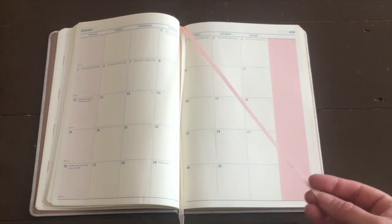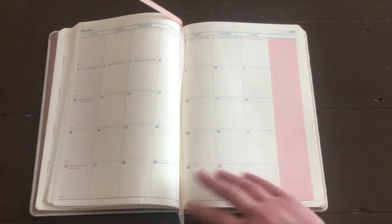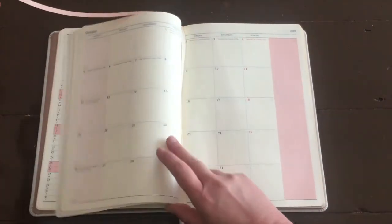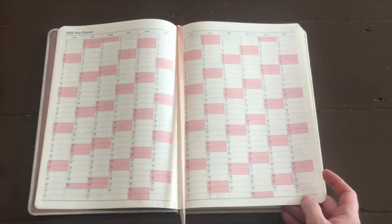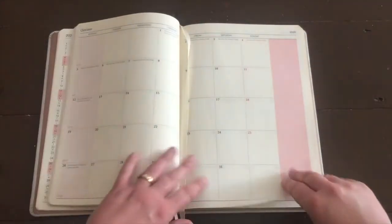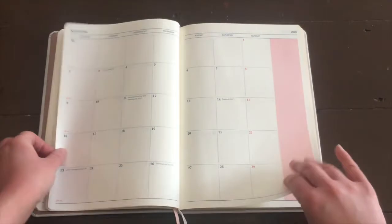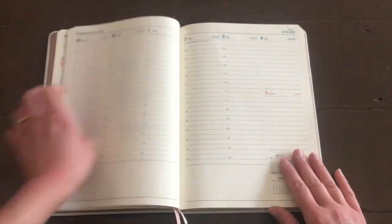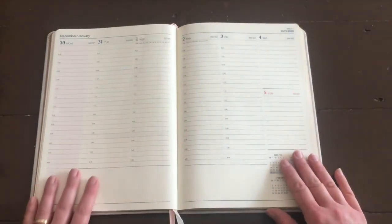This diary has two ribbons as well. I have to admit, two ribbons are definitely my favorite because sometimes you want to look at a reminder for a month at a glance page and at the same time, you want to look at the week that you're living in as well. So I find two ribbons is probably my favorite setup when it comes to a diary.